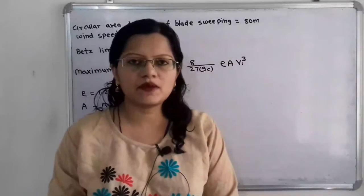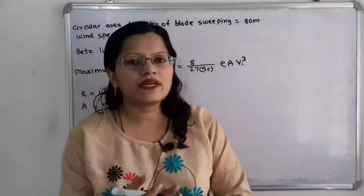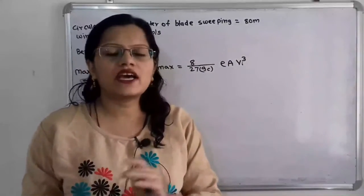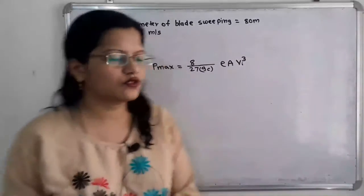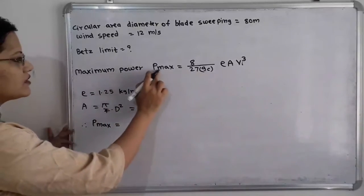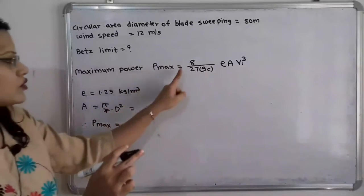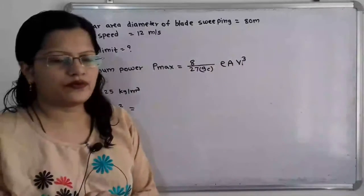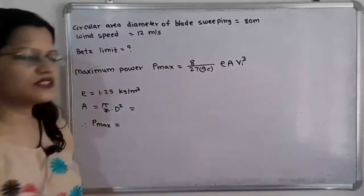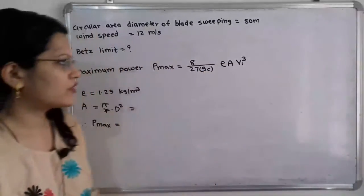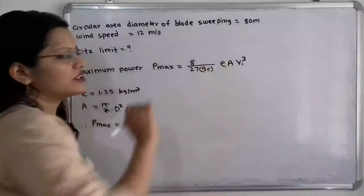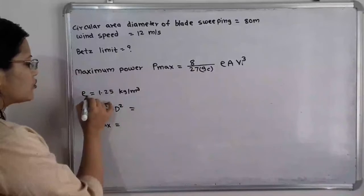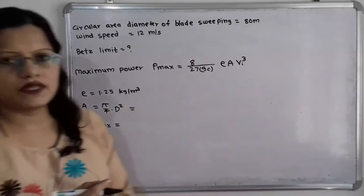The Betz limit is the maximum power that can be converted from wind energy to mechanical energy with the help of a wind turbine. The formula for maximum power is Pmax equal to 8 by 27 times Gc times rho times A times Vi cube. Here Gc is the conversion factor equal to 1 kilogram, and rho is 1.25 kilogram per meter cube.